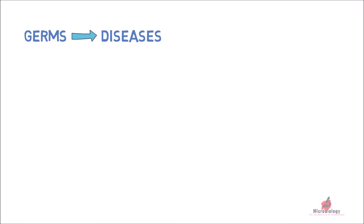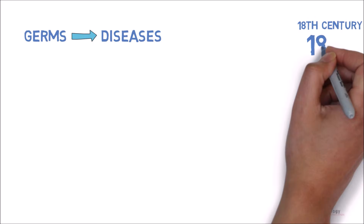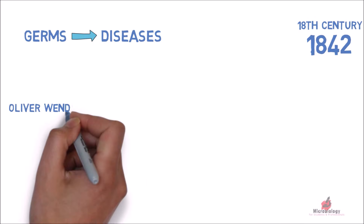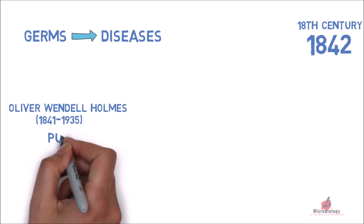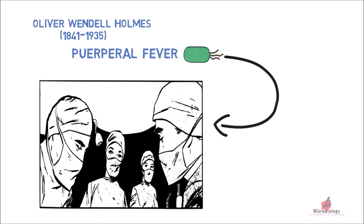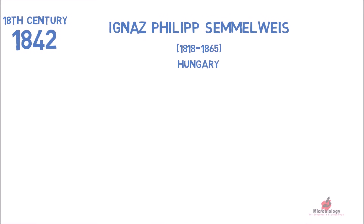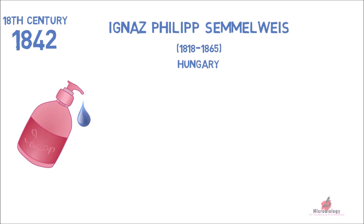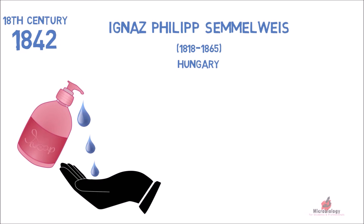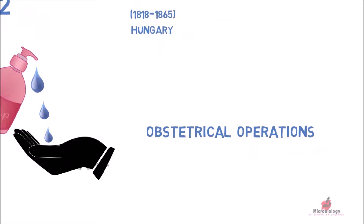The concept of germs causing diseases became quite general during the 18th century. In 1842, Oliver Wendell Holmes believed that puerperal fever, a disease of childbirth, was caused by a germ carried from one mother to another by midwives and physicians. At the same time, Ignaz Philipp Semmelweis from Hungary started using antiseptics for hand disinfection during obstetrical operations.